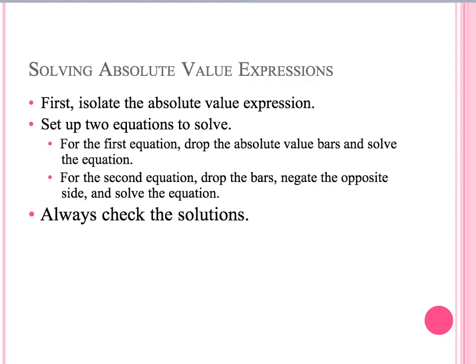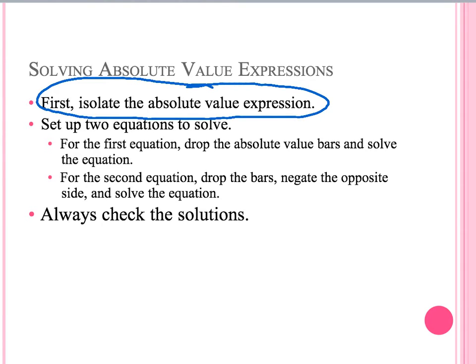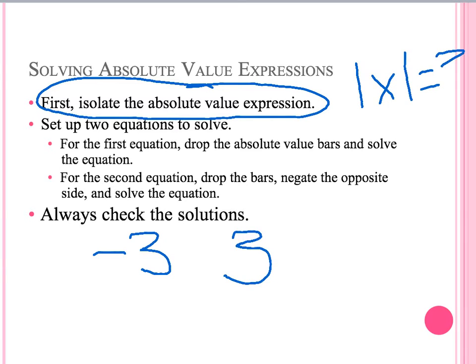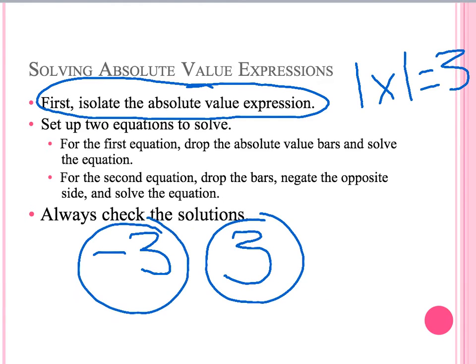Some steps to solving absolute values include: first, like always, we are going to isolate the absolute value expression. Once we do that, we are going to set up two equations to solve. We are going to have an equation with a negative number and a positive number, just like our example with the absolute value equal to 3. Our equations will have an answer equal to a positive and a negative number.